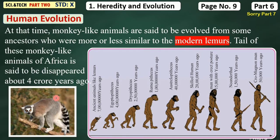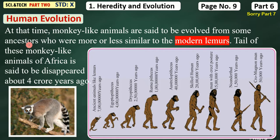After that, monkey-like animals are said to have evolved. There is no confirmation, but it is said that monkey-like animals evolved. From some ancestors — we don't know exactly where they came from — these monkey-like animals evolved.